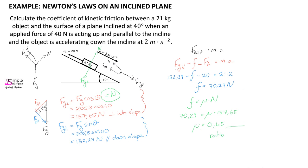Once again, we use Newton's second law by drawing a free body diagram to identify all forces acting on the object. We resolve the gravitational force into its respective components, then apply Newton's second law by adding all forces in the same direction and subtracting forces acting in the opposite direction to find our unknown.